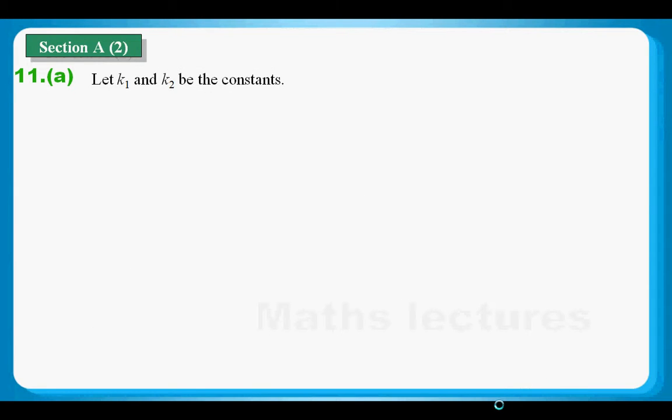So for question 11, this is talking about variations. And as we know, the cost is calculated by two parts. This is partial variation.